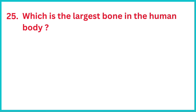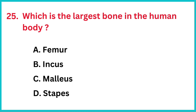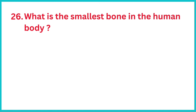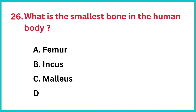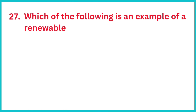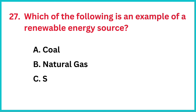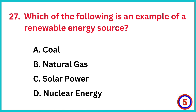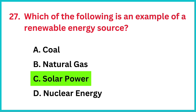Which is the largest bone in the human body? The correct answer is option A: femur. What is the smallest bone in the human body? The correct answer is option D: stapes. Which of the following is an example of a renewable energy source? The correct answer is option C: solar energy.